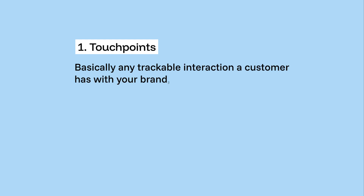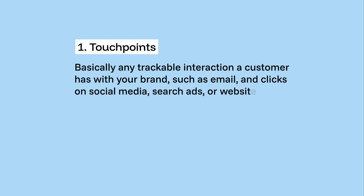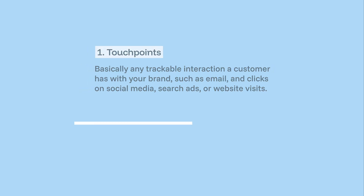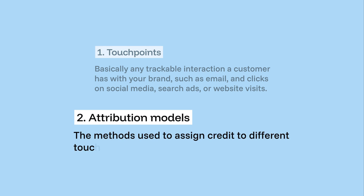These are the key concepts to it. First, let's start with touchpoints — basically any trackable interaction a customer has with your brand, such as email and clicks on social media, search ads, or website visits. Second, the attribution model: the method used to assign credit to different touchpoints for a conversion.